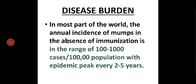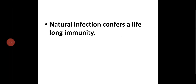There will be 100 to 1,000 cases per 10,000 population, with an outbreak of the disease every two to five years. Natural infection confers lifelong immunity — once infected, you will get lifelong immunity.